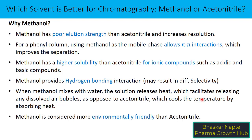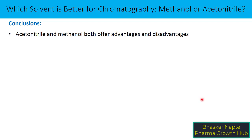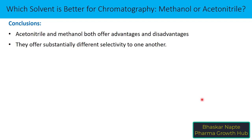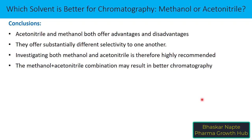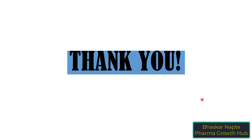Methanol is considered more environmentally friendly than acetonitrile and is much less toxic. In conclusion, acetonitrile and methanol both offer advantages and disadvantages. They offer substantially different selectivity because of how they interact with analytes — methanol interacts via hydrogen bonding while acetonitrile interacts via dipole-dipole interaction. Investigating both methanol and acetonitrile is therefore highly recommended. It is always preferred to examine chromatogram characteristics with each solvent separately, and if required, you can also use a combination of both as part of your mobile phase.